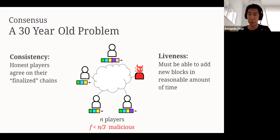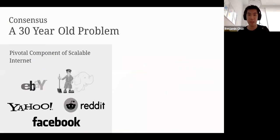Of course, we need one more property called liveness. We would like to be able to add new blocks to our blockchain in a reasonable amount of time. It turns out that consensus protocols for the last 30 years have become a pivotal component of our scalable internet infrastructure.